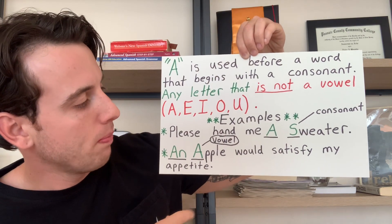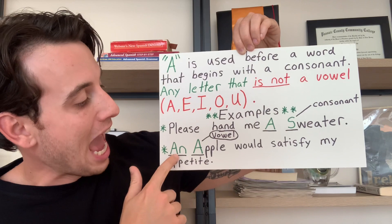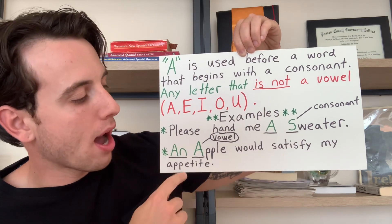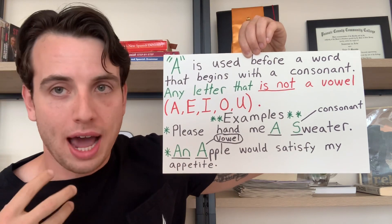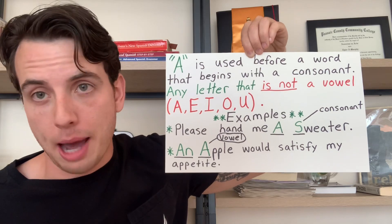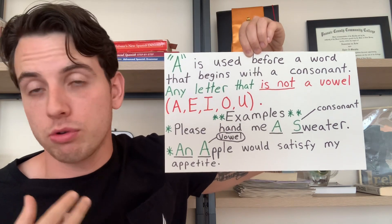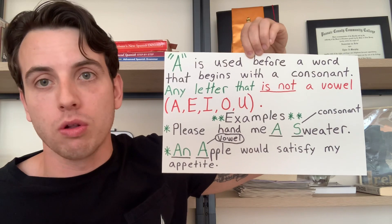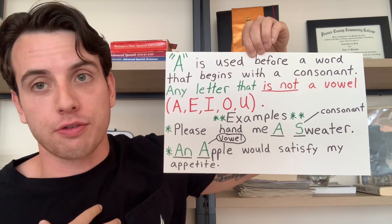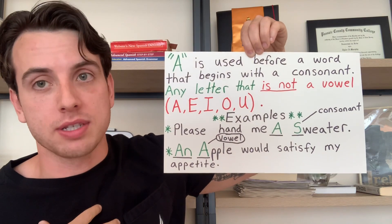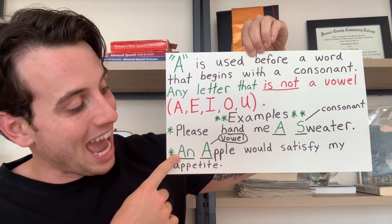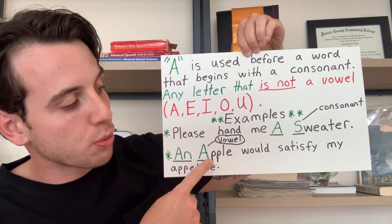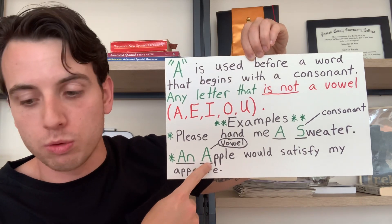Next example: an apple would satisfy my appetite. Not a specific apple — I didn't say a red apple or green apple, just an apple. Any apple would satisfy my appetite. The reason we use 'an' is because 'apple' begins with a vowel, which is A.